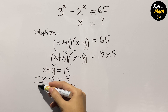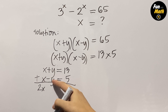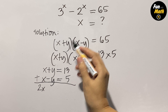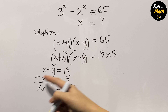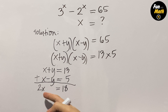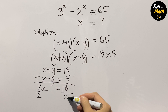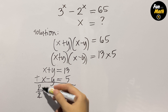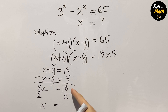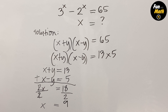We can add the two equations. So x plus x is 2x; y plus negative y cancels; and 13 plus 5 is 18. We divide both sides by 2, so x is equal to 18 divided by 2, which is equal to 9. So this is the value of x, that is equal to 9.